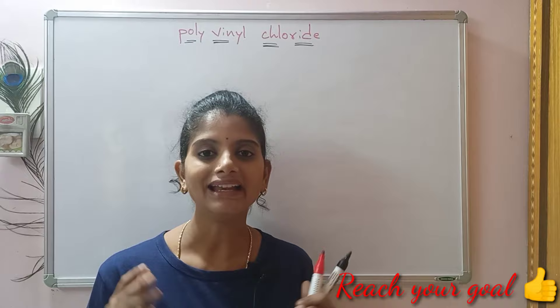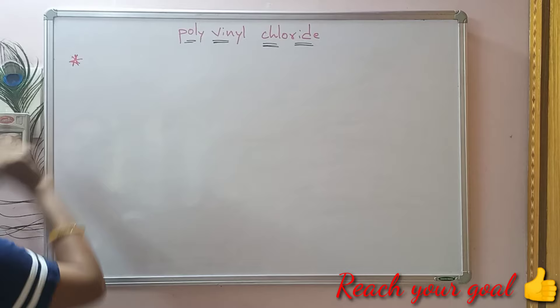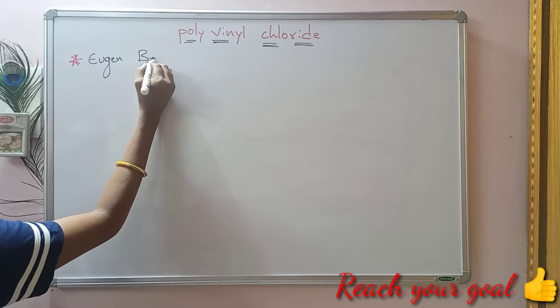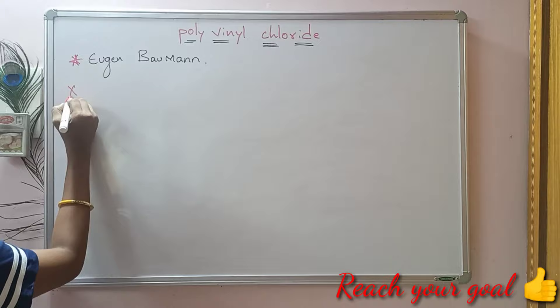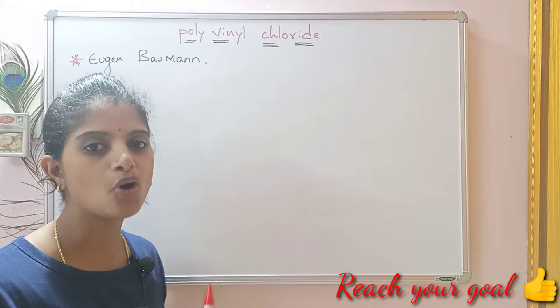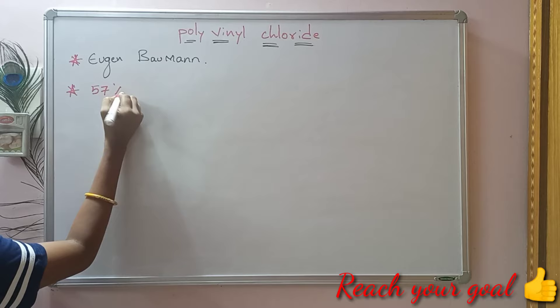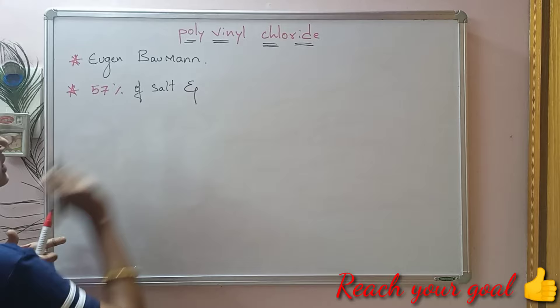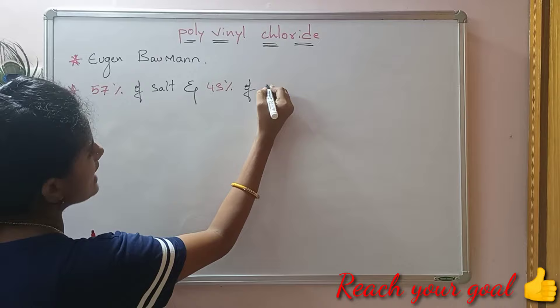Polyvinyl chloride was first made unintentionally in 1872 by German chemist Eugene Boman. He exposed vinyl chloride gas sealed in a tube to sunlight and produced a white solid called polyvinyl chloride. Polyvinyl chloride was made by 57% of salt and 43% of gas or oil.